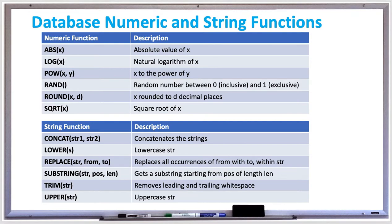Trim will remove the leading and trailing white spaces. This is actually a really useful function because if you're reading data from a text file or some outside source into your database, and that data is numeric, you don't want blank spaces in that numeric value or you'll get database errors. So it's good to run trim against those types of data. And then upper makes your string all uppercase.